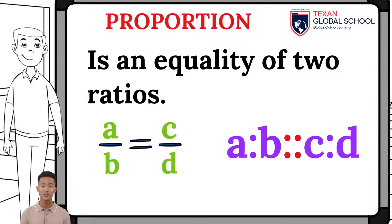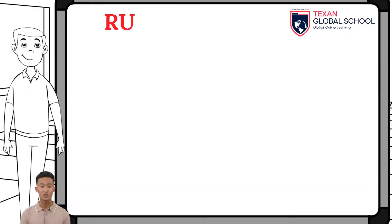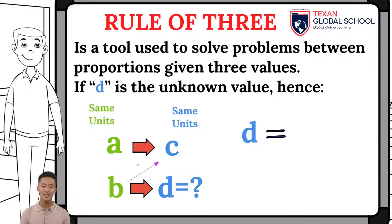These concepts are essential since the Rule of Three is based on them. The Rule of Three is a tool used to solve problems between proportions given three values. In this case, if D is the unknown, then we can find its value given the other three values. Multiply B by C and divide the result by A. It is very important to emphasize that the values in the left column have the same units, and the values in the right column have their same units.